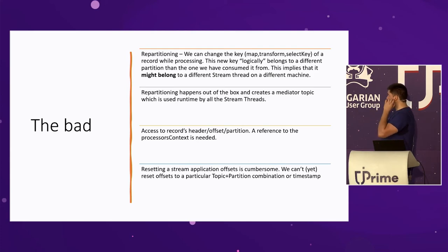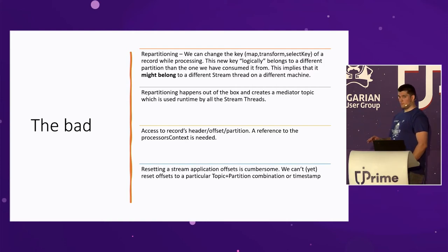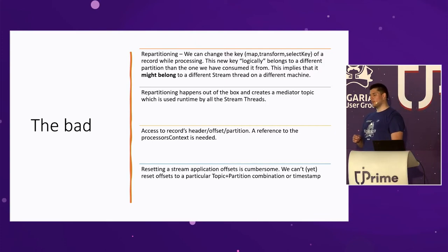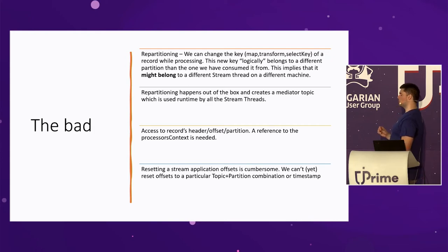The other bad thing about Kafka Streams is access to Kafka record headers, offsets, and partitions. I'm quite sure everyone using Kafka here is pulling something from headers — it could be metadata for serialization or something else. In Kafka Streams, you can hack around it and access those, but I don't like hacking around, and this is where it falls short for me.